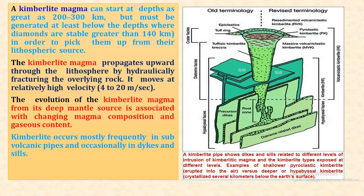Kimberlite occurs most frequently in sub-volcanic pipes and occasionally in dikes and sills. Here on the right side, the kimberlite pipes show dikes and sills related to different levels of intrusion of kimberlite magma in the kimberlite pipe exposed at different levels. An example of cellular pyroclastic kimberlite erupted into the air versus deeper hypabyssal kimberlite just 7 km below the surface.